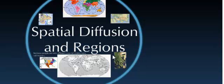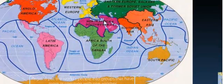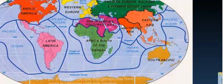So that is spatial diffusion and regions. Remember, regions don't exist in isolation. There's always going to be trade, migration, and war so that you can have interaction between all these different cultural regions, creating an exchange of ideas.